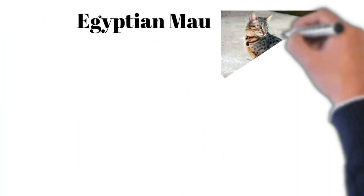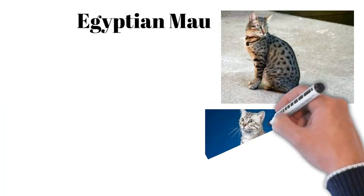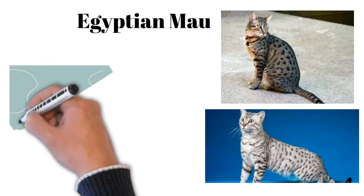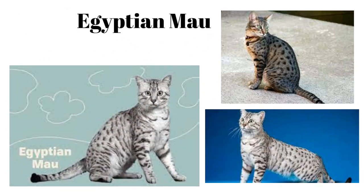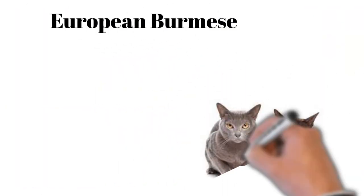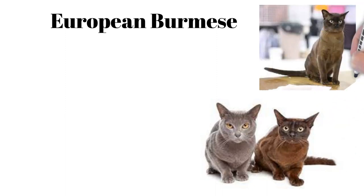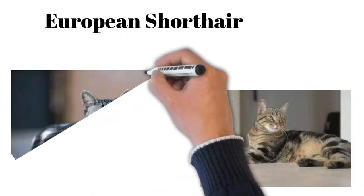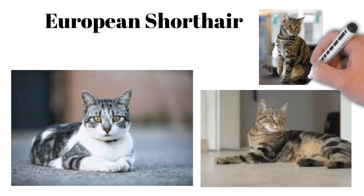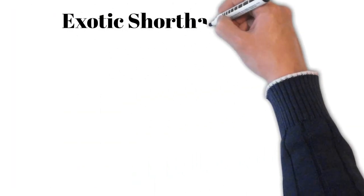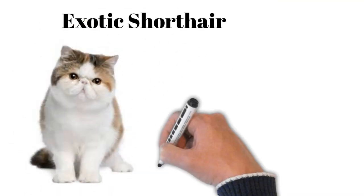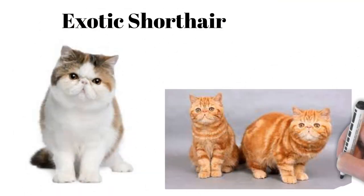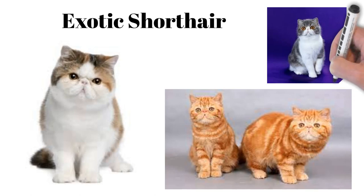Egyptian Mau: spotted coat, only naturally spotted domestic breed, loyal, vocal. European Burmese: affectionate, playful, enjoys being part of the family activities. European Shorthair: robust, easygoing, affectionate, good hunter. Exotic Shorthair: Persian-like features, short coat, calm, affectionate, low-maintenance.